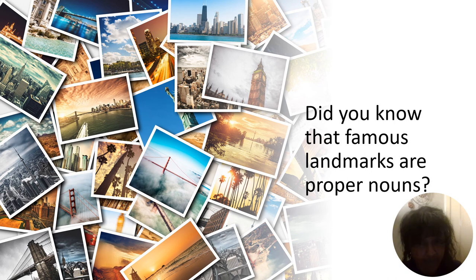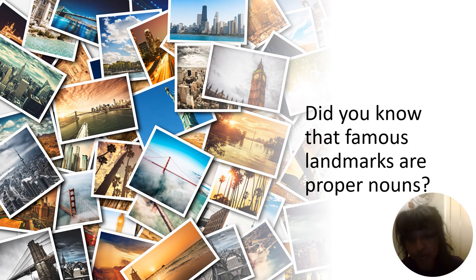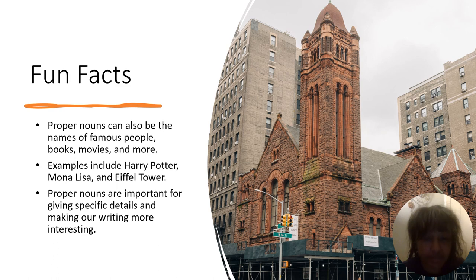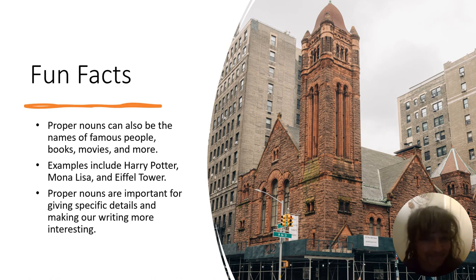Did you know that famous landmarks are proper nouns? Like the city that you live in — maybe it has a famous landmark. I live in Arizona, so one of my famous landmarks would be the Grand Canyon. Here are some fun facts about proper nouns: proper nouns can also be the names of famous people, or names of books, movies, and more. Examples include Harry Potter, Mona Lisa, and the Eiffel Tower. Proper names are important for giving specific details and making our writing more interesting.